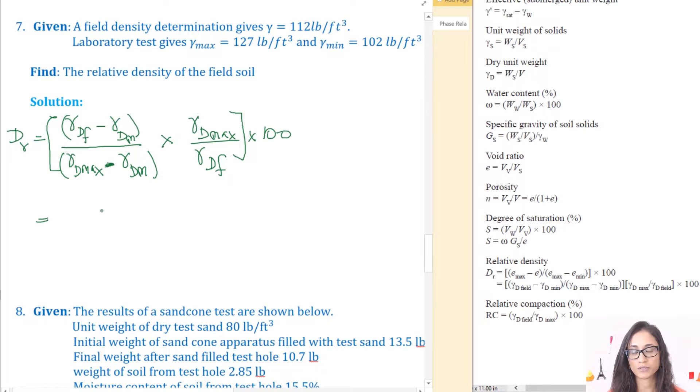Okay so gamma d field is 112. Gamma d min is 102. Divide that by gamma d max which is 127 minus 102. Multiply it by gamma d max which is 127 and then divide that by gamma d f which is 112.